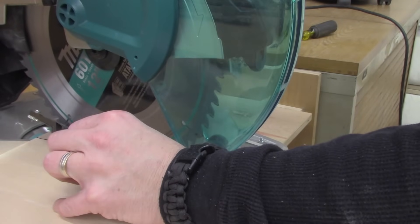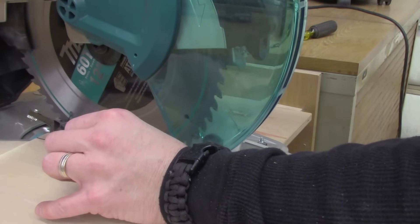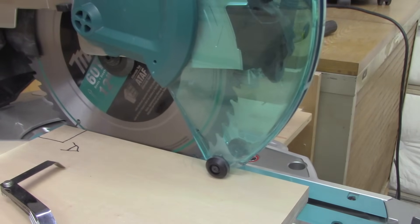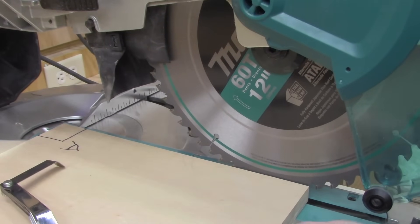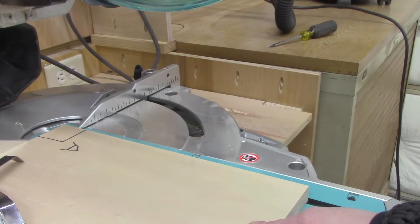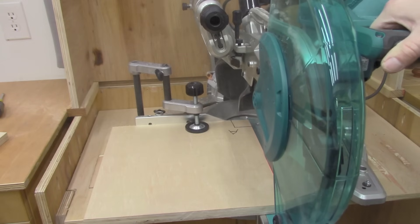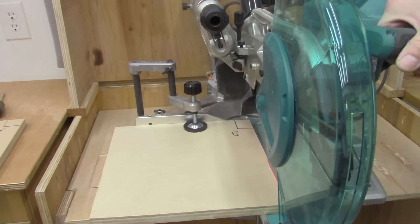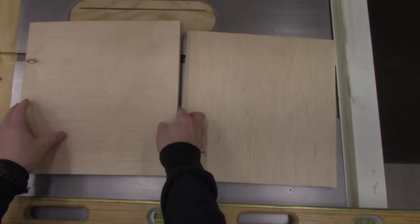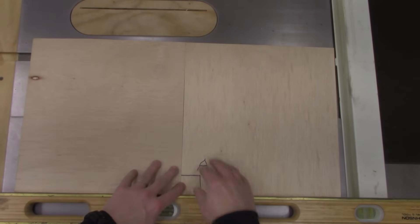If you are using feeler gauges, make sure you're measuring off the teeth and not off the saw blade body. You want to measure off of the teeth. And just a little tweaking here and there until you get it where you think it's right. Alright, that feels good to me. I'm going to snug everything up and do another test cut. Alright, for me, I'm going to call that good.